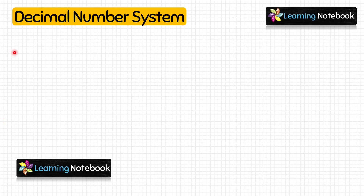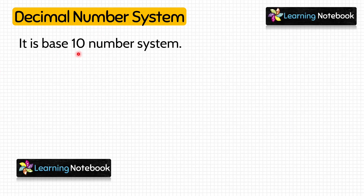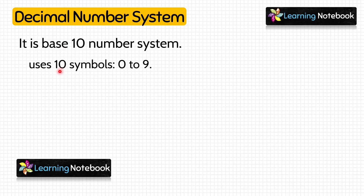First, let's understand the decimal number system. The decimal number system is a base 10 number system. Base 10 indicates that this system uses 10 symbols to represent any number — 10 symbols means 0 to 9.